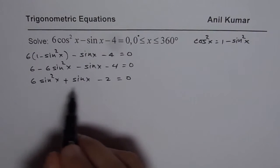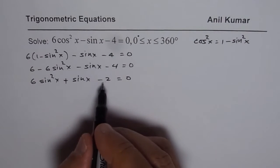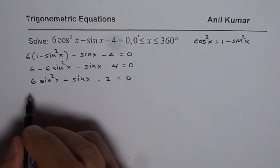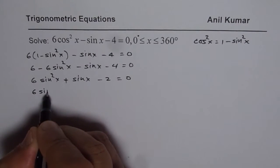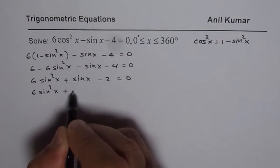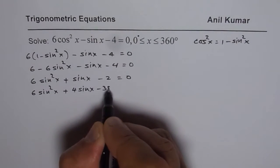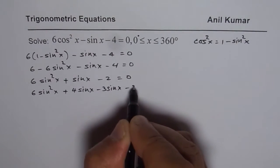Now 6 times 2 is 12. So we are looking for a product of 12 and sum of 1 which is 4 and 3. So it is 6 sin square x plus 4 positive and 3 negative minus 2 equals to 0.